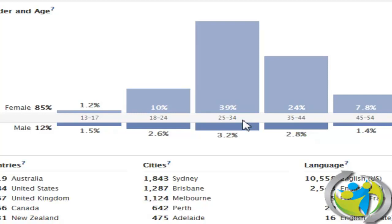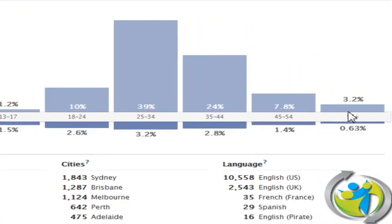If we were to lay a target over our data, the center core of our target would be this demographic segment here. Then the next outer ring would be this demographic segment — women aged 35 to 44. And then our outer ring of the target would be typically the rest of our market.